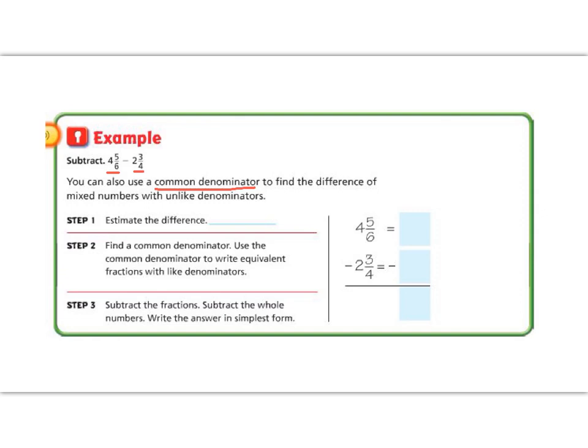If we have 4 and 5/6, 5/6 is almost a whole number. So 4 plus 1 would be 5, minus 3/4. 3/4 is almost 4/4, which would be a whole number. So 2 plus 1 would be 3. So we are going to estimate that our answer is going to be about 2.